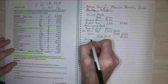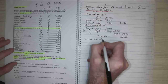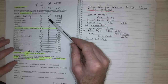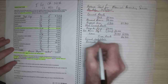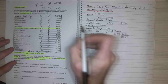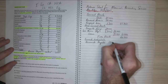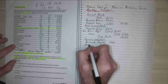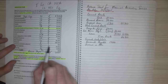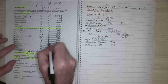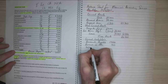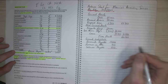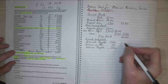My next section is current liabilities. My first one is accounts payable, which is $17,000. My next one is revenue in advance — and that gives me a total current liabilities of $18,000.